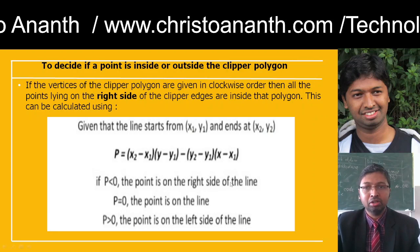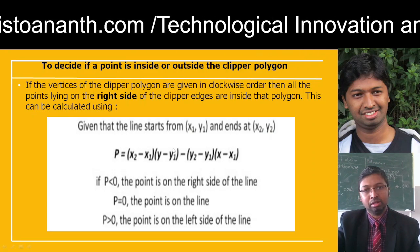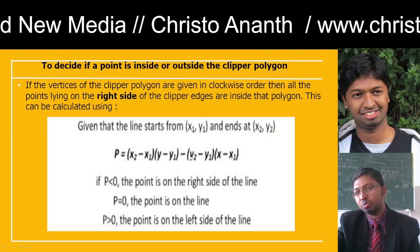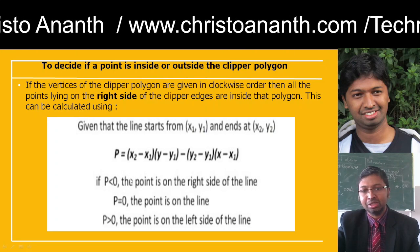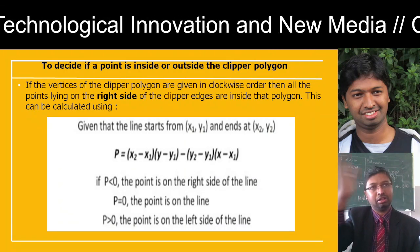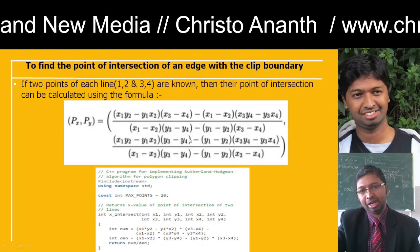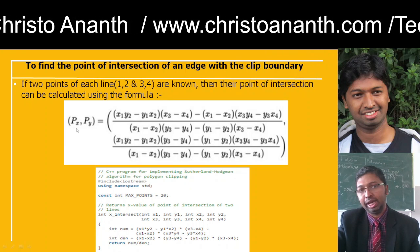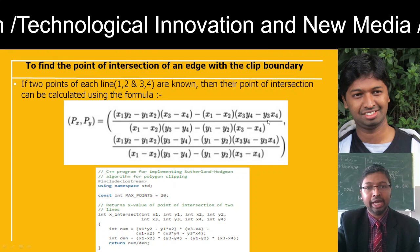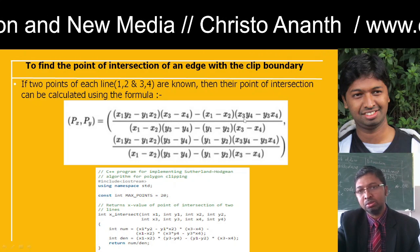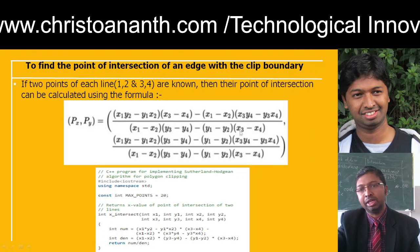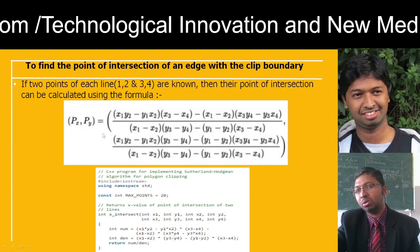In clockwise order, given a line from (x1,y1) to (x2,y2), you find the distance using: (x2 - x1)(y - y1) - (y2 - y1)(x - x1). If less than 0, the point is on the right side; equal to 0, it lies on the line; greater than 0, it is on the left side. The intersection point px is: [(x1*y2 - y1*x2)(x3 - x4) - (x1 - x2)(x3*y4 - y3*x4)] / [(x1 - x2)(y3 - y4) - (y1 - y2)(x3 - x4)]. The denominator is the same for both px and py; only the numerator changes.